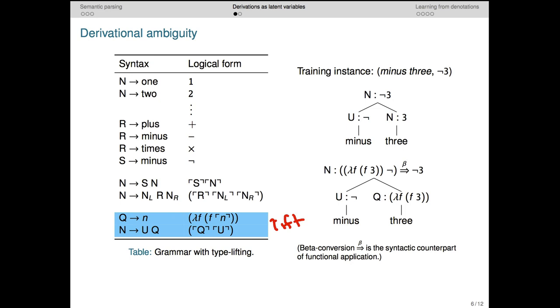The intuition behind lift goes like this. Usually if we have an integer it will be the argument to a unary predicate like minus. What lift does is reverse the order of this operation, turning the integer into the functor.